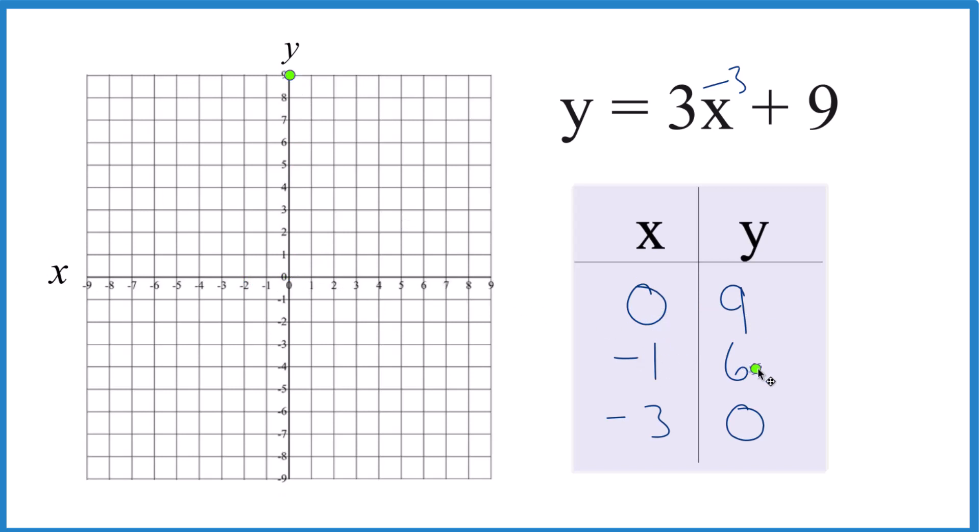How about x is negative 1, y is 6, right there. We could get away with two points, but I like doing 3. Make sure we're correct here. x is negative 3, y is 0, right there.